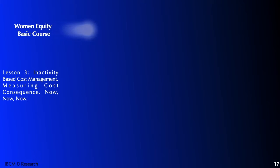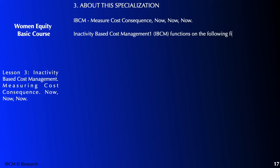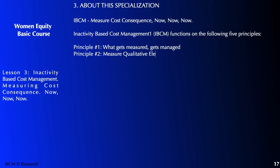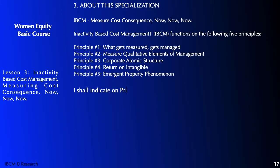Women equity basic course — lesson number three: activity based cost management, measuring cost consequence. ABCM functions on five principles. Principle number one: what gets measured gets managed. Principle number two: measure qualitative elements management. Principle number three: corporate atomic structure. Principle number four: return on intangible. Principle number five: emergent property phenomenon.